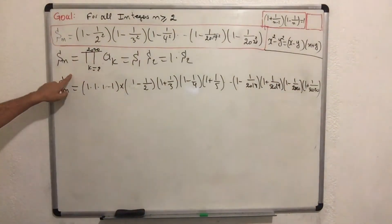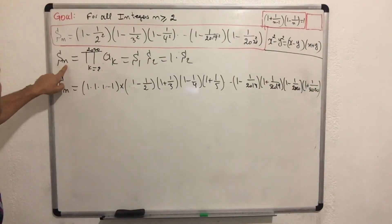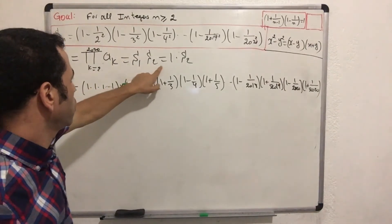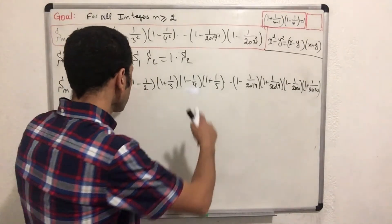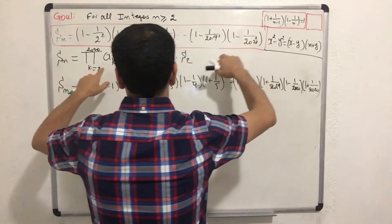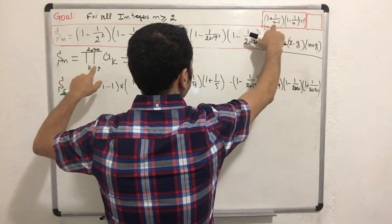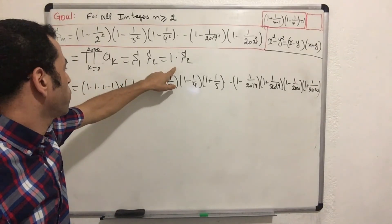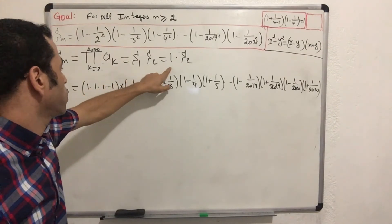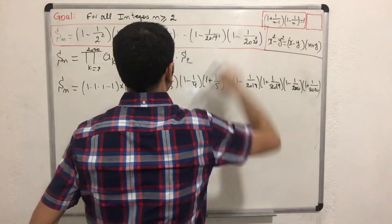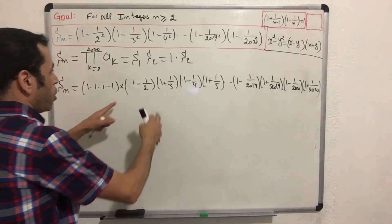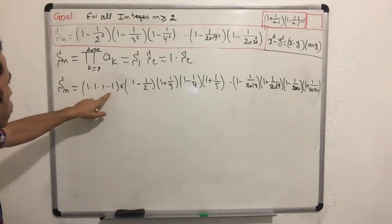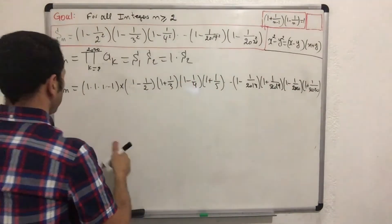In this last step, the product S sub n equals the product of a sub k for k from 2 to 2020. We write it as S sub 1 multiplied by S sub 2. S sub 1 represents all the paired sub-products that we showed equal 1, so those all multiply to 1. The whole product then equals 1 times the remaining unpaired factors, which we now need to evaluate.